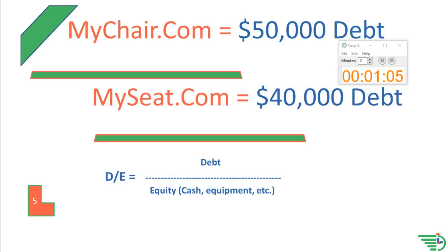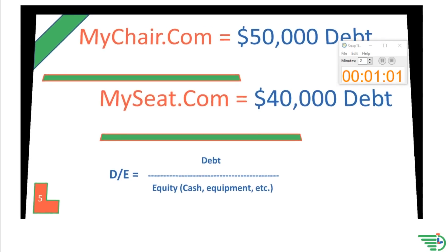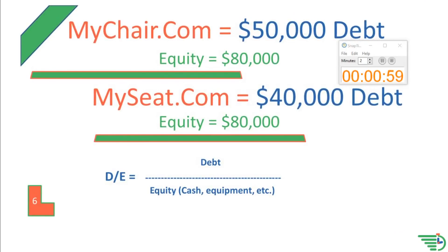The Debt to Equity Ratio is calculated by dividing the amount of debt the company has by its total equity. In our example, each of the two companies has an equity value of $80,000.